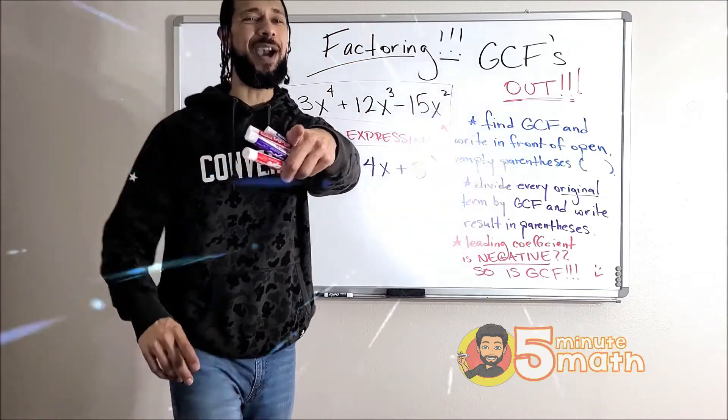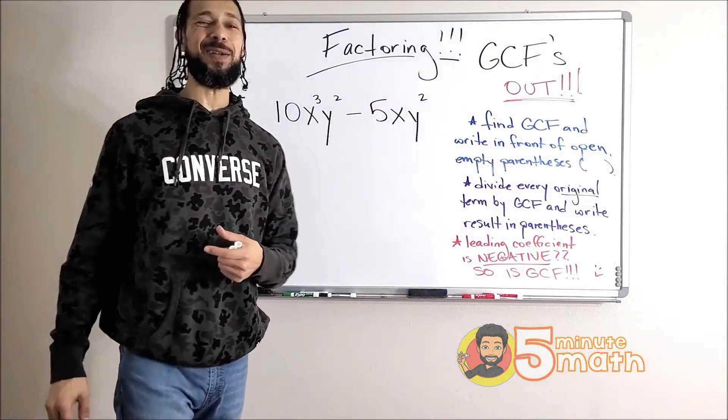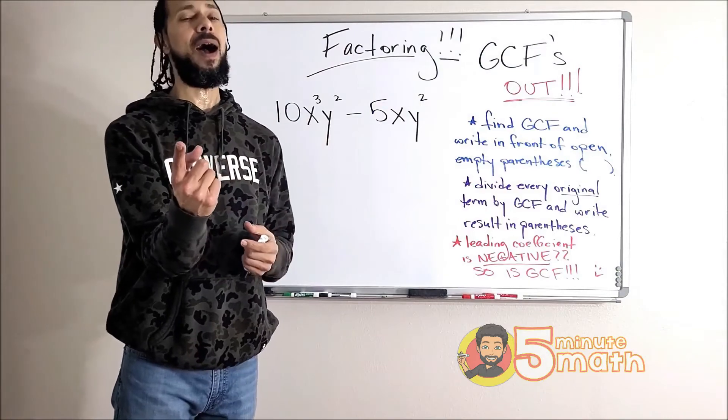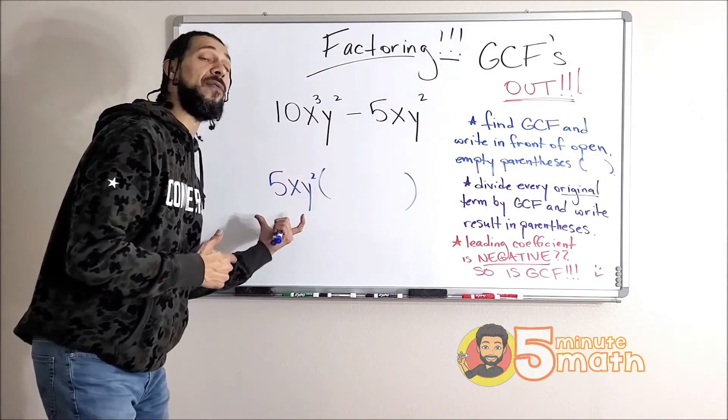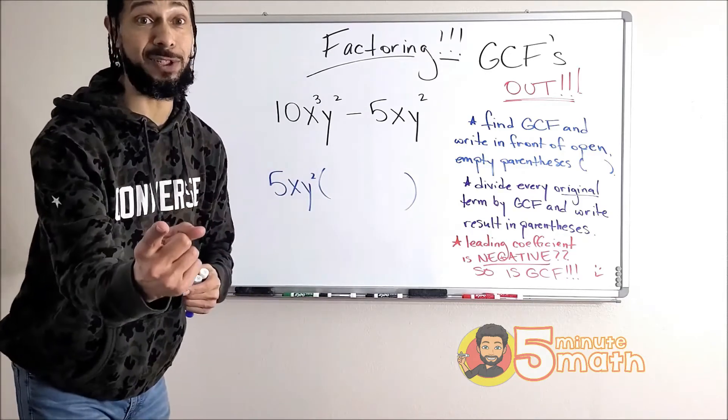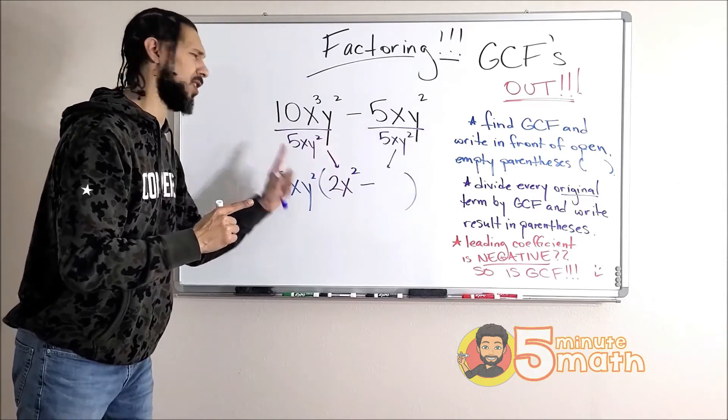One more, let's kick it all the way up. We got a couple of different letters now. You think that changes the steps? Uh-uh. Step number one, we found the GCF, we wrote it in front of some open parentheses. Step two, the first term: 10 divided by 5 is 2, x to the third divided by x is x squared, the y squares cancel out, but what happens here? Notice how the top of my fraction and bottom of my fraction are exactly the same.